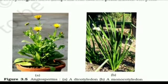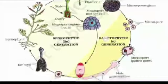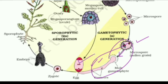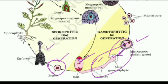Looking at the diagram of angiosperms, we have dicotyledons and monocotyledons. The microspores become pollen grains, which attach with the male gametophytes. The male gametophytes and egg fuse together to form a zygote, which develops into an embryo — this is the sporophyte stage.